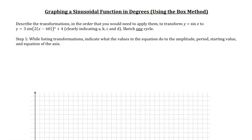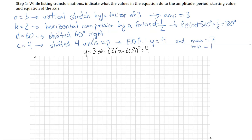The key here is not only the list of transformations, but we also want to indicate what those values in the equation do to the amplitude, the period, starting value, and equation of the axis. So let's pull out the values that we found. I've just written the equation there at the top of the grid, and the a value being 3 means it's vertically stretched by a factor of 3, which means the amplitude is 3. So that's one of the first pieces of information.